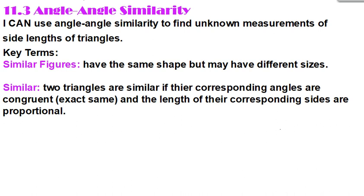We can assume that all of our triangles, if they're similar, are just some kind of dilation of each other. To be similar, two triangles are similar if their corresponding angles are congruent. Remember, corresponding means same place, same side type of situation.